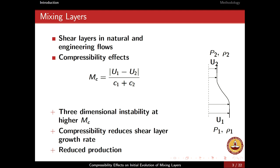Compressibility effects are quantified by the convective Mach number, defined such that C1 and C2 are the speed of sound in either stream. The most notable effects of compressibility on the mixing layer are: first, the instability is three-dimensional when the flow is compressible, whereas in incompressible flow it is two-dimensional, characterized by roller structures. Compressibility also reduces the growth of the shear layer, and the turbulence statistics — specifically the production — are reduced by compressibility effects.